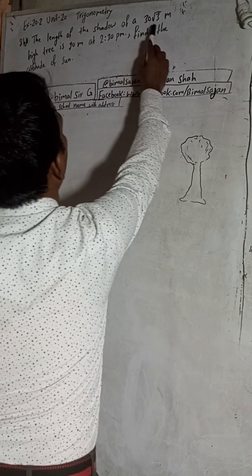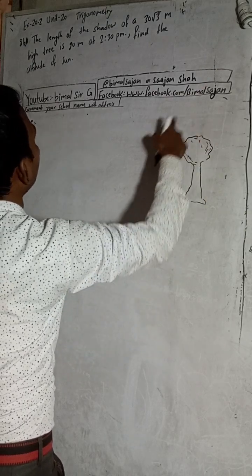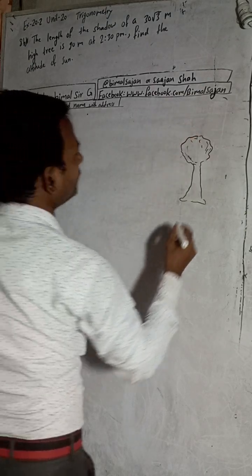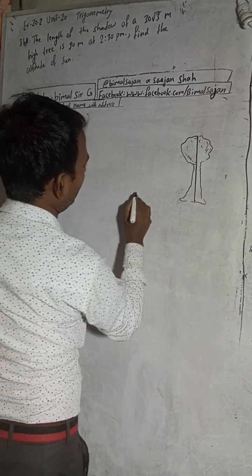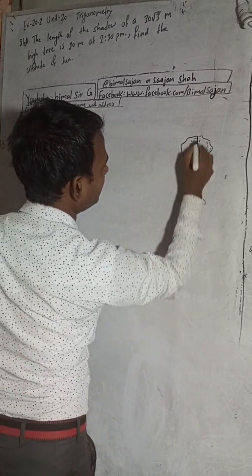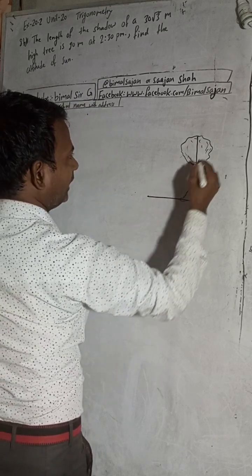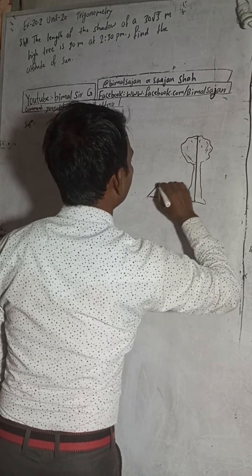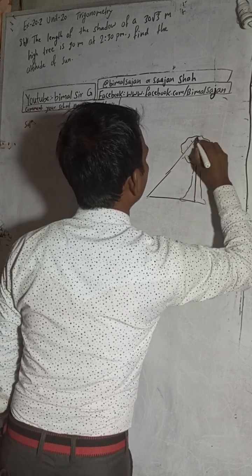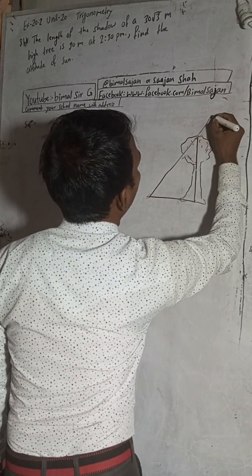Now I'll start the solution. The question is: the length of the shadow of a 30√3 meter high tree is 90 meters. So this is the tree — I'll draw this. This is the height of the tree and the shadow is on this side. The sun will be somewhere here — suppose you can see the angle of elevation.